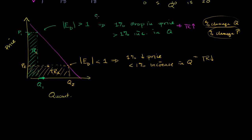Remember, this is an inelastic situation. When it is elastic, a drop in price tends to make total revenue go up. And when it is inelastic, a drop in price tends to make total revenue go down.